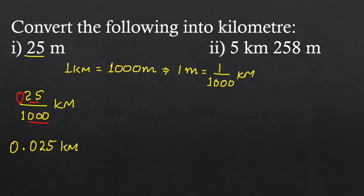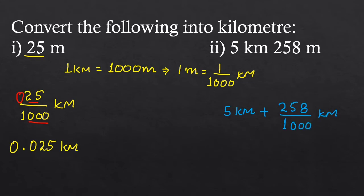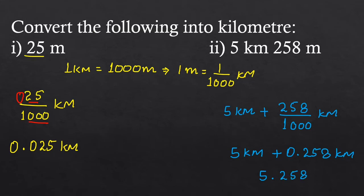The next part is 5 kilometers and 258 meters. 5 kilometers is already in kilometers, so we write it as 5 kilometers plus 258 upon 1000 kilometers. Dividing 258 by 1000 gives 0.258 kilometers. So 5 plus 0 gives 5.258 kilometers.